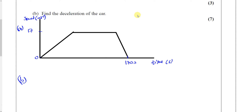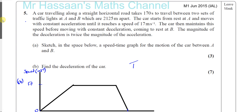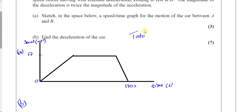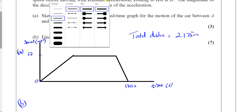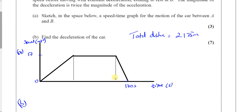Now we've got to find the deceleration of the car, which is part B. We know the total distance traveled is 2,125 meters, so the area of the trapezium must equal 2,125 meters. The area under a speed time graph tells you the total distance traveled. There's a relationship between the acceleration and deceleration sections because if the deceleration is twice the magnitude of the acceleration, and the car accelerated to the same speed it decelerated from to zero...